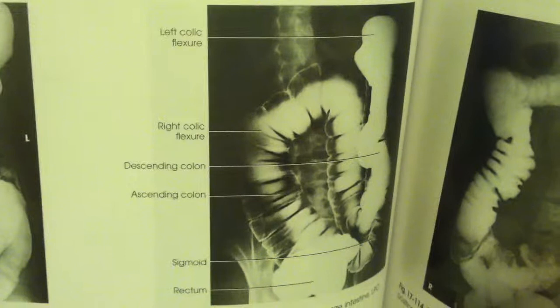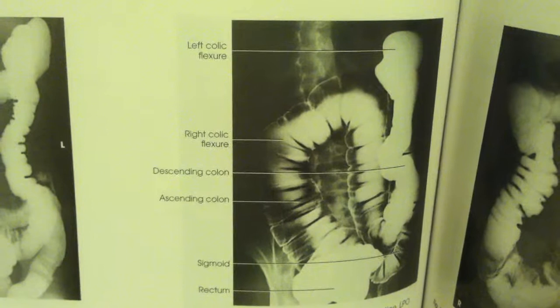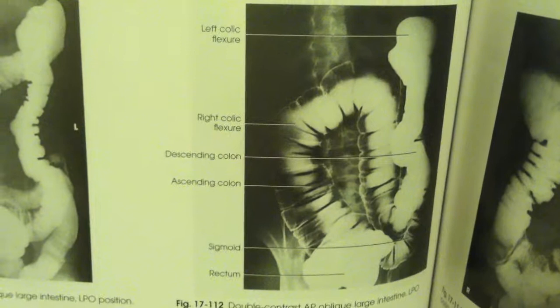The next image I took was the LPO, shown right here. It was an AP oblique projection in the LPO position, and the LPO best demonstrates the right colic flexure.